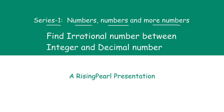Today we are going to look at finding an irrational number between an integer and a decimal number. So we are going to talk about two different kinds of numbers and how we can find an irrational number in between these two types. So let us get started.